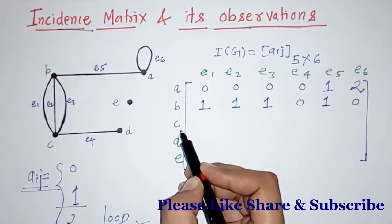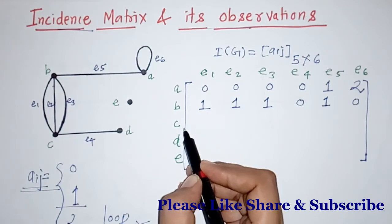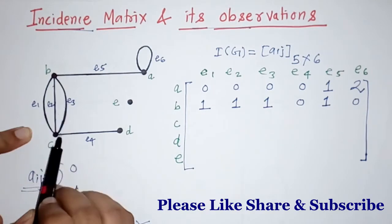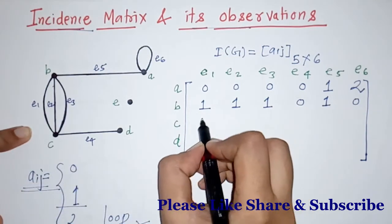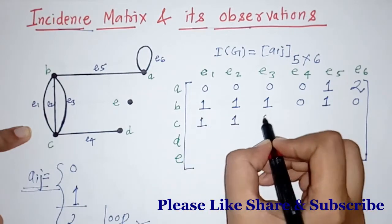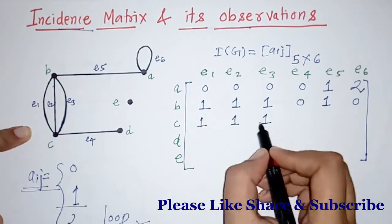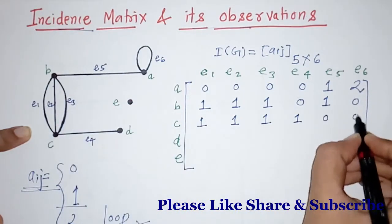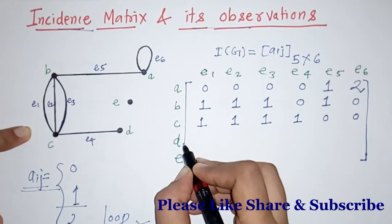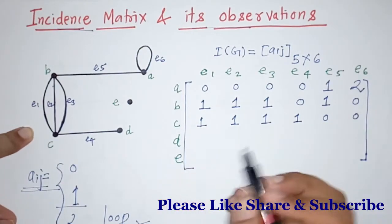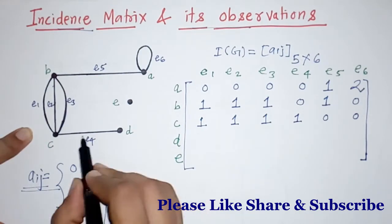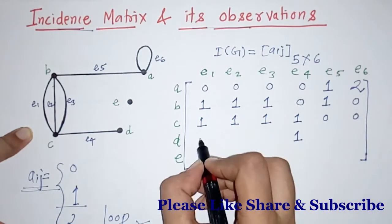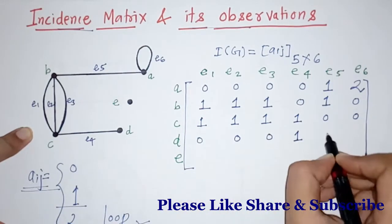For vertex C: it is incident with edges E1, E2, E3, and E4. So we write 1 for E1, E2, E3, and E4, and all other elements are 0.